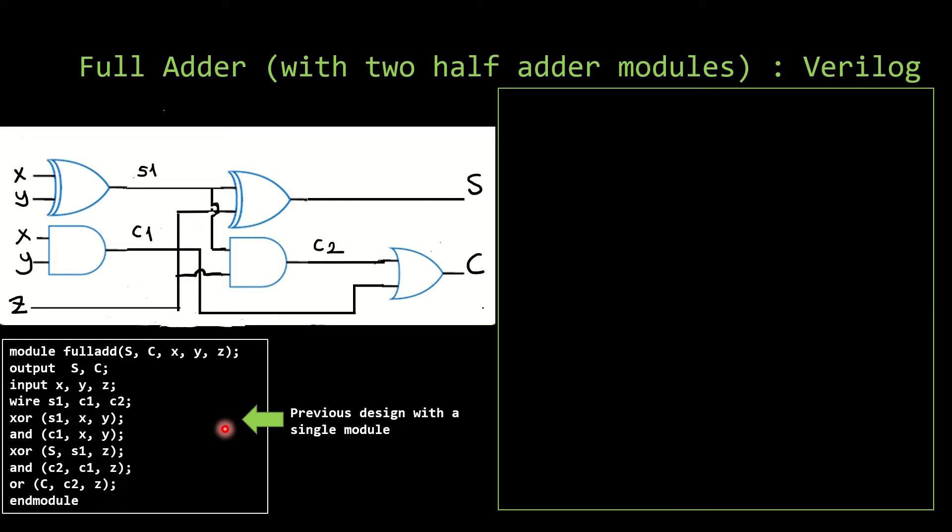Let's see how we had written our full-adder Verilog code previously. You can see that all of the five logic gates that are seen in the circuit were defined in our Verilog design code.